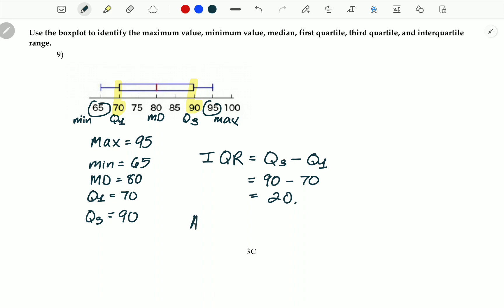So the answer to this question is going to be 95, 65, 80, 70, 90, and 20, in order. And that is it for number nine. Take care.